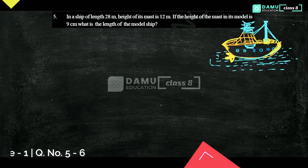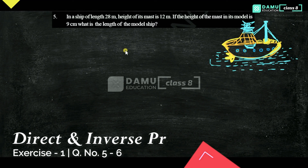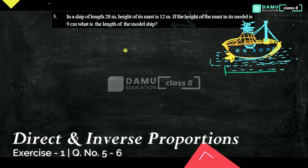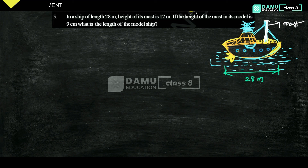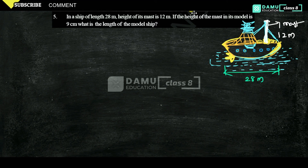Thanks for watching. Please subscribe and click the bell icon. In this module, we are going to discuss a question: in a ship of length 28 meters, the height of its mast — which is an iron pillar used for support — is 12 meters. If the height of its mast in its model is 9 centimeters, then what is the length of the model ship?